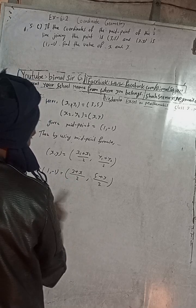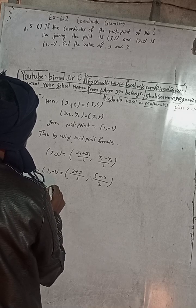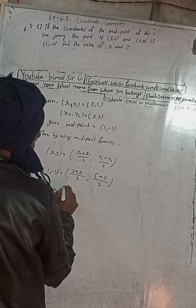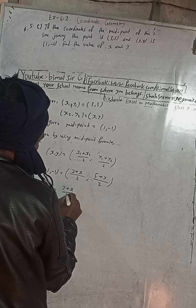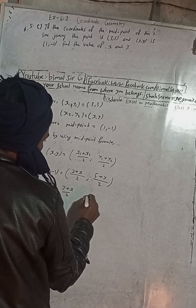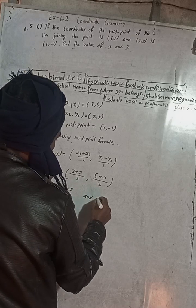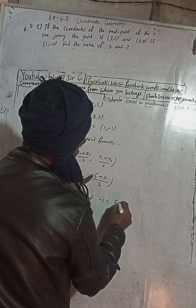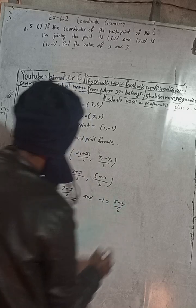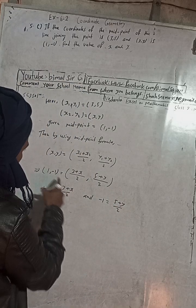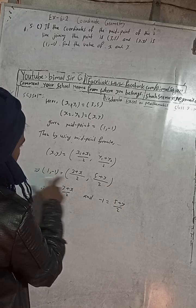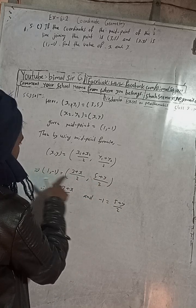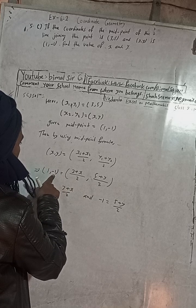Therefore we can write: 1 is equal to 3 plus x by 2, and minus 1 is equal to 5 plus y by 2. This is because corresponding elements are equal — the x-coordinate is equal to the x-coordinate and the y-coordinate is equal to the y-coordinate.